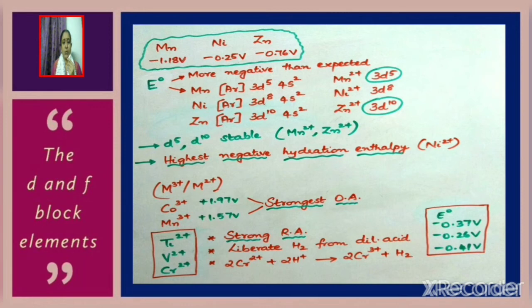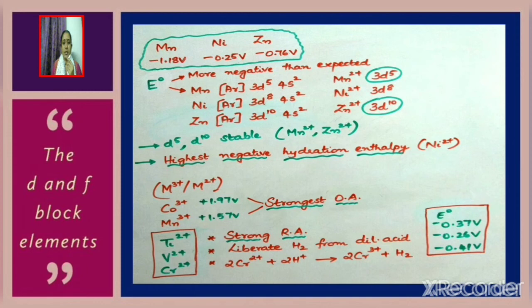The E⁰ values for manganese, nickel, and zinc are more negative than expected. For manganese and zinc, this is due to the more stable d⁵ and d¹⁰ configurations of Mn²⁺ and Zn²⁺. For nickel, Ni²⁺ has the configuration 3d⁸ and the highest negative hydration enthalpy, which is why nickel's E⁰ value is more negative than expected.